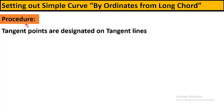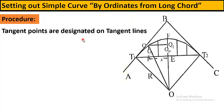Here is the procedure we will follow — keep these steps in mind as we are going to use them to set out a curve. The first step is that tangent points are designated on the tangent lines. T1 and T2 are the two tangent points, designated on the tangent lines. The lines AB and BC are the tangent lines.